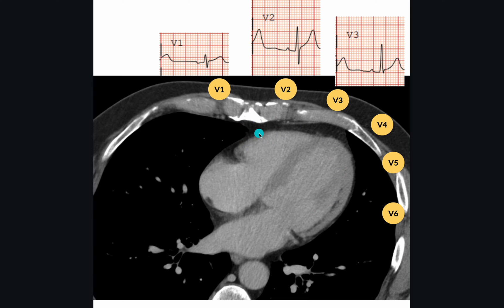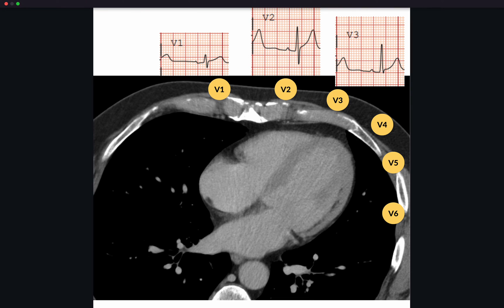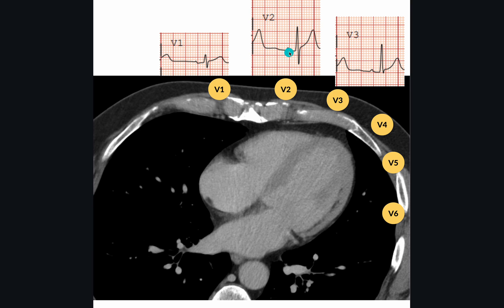Other causes of early transition may include right ventricular hypertrophy — for instance, in a patient with chronic pulmonary hypertension, or right ventricular strain due to pulmonary embolism. For late transitioning, where the QRS complexes are predominantly negative over the entire precordial leads, one of the causes is an anterior wall infarction, where there is loss of forces anteriorly.